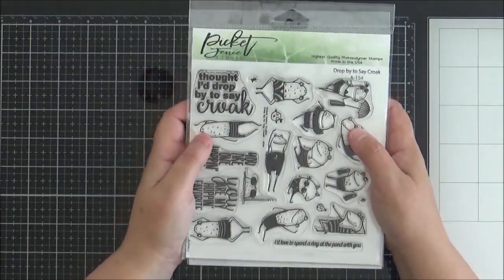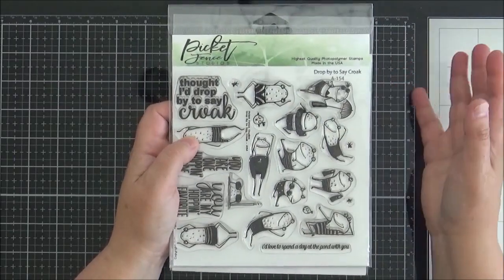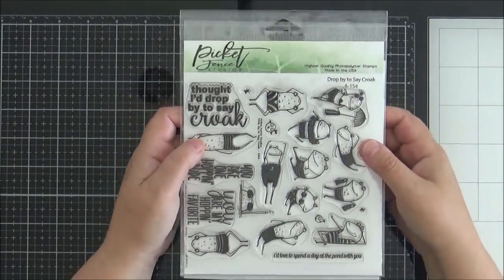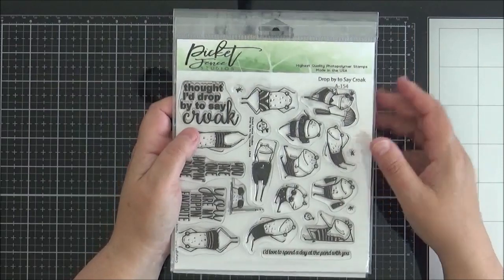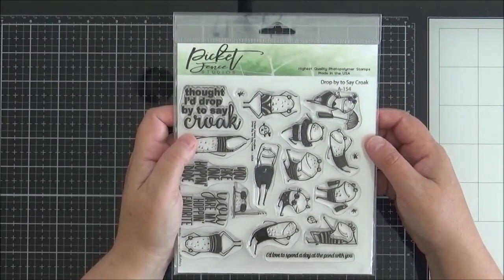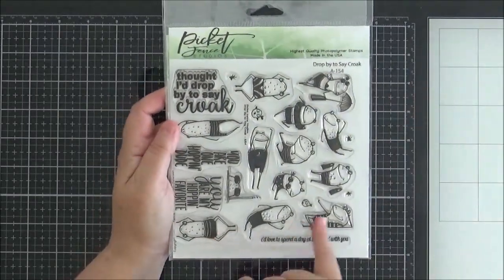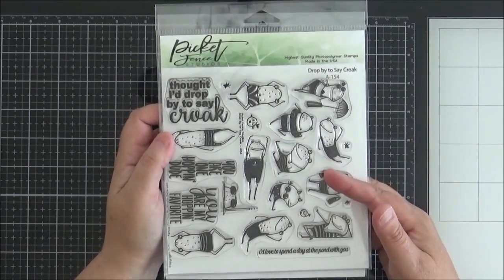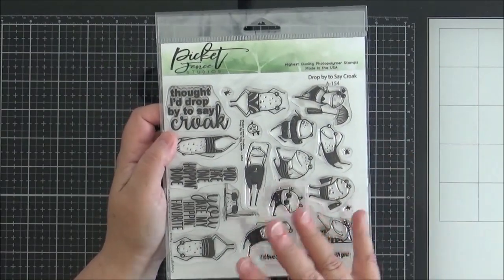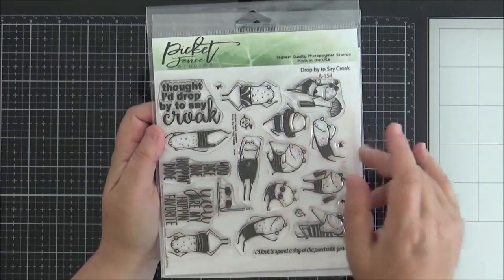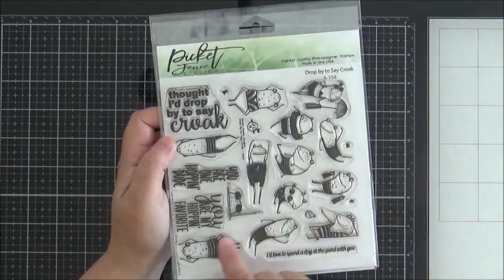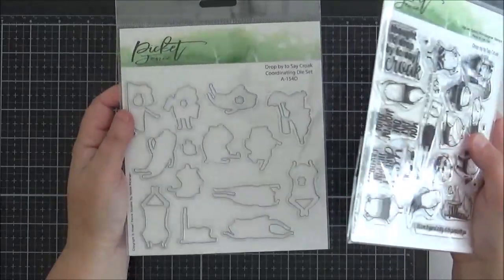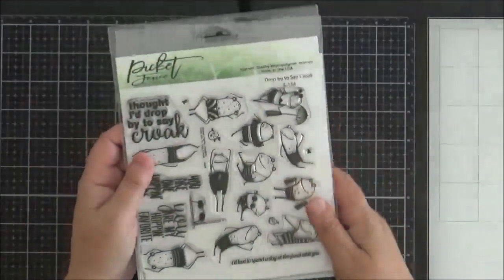And that leads me nicely onto the next product that I wanted to share with you. I've got some items coming up that all kind of have a pond theme to them. And they also pair really well with the tree silhouette dies that I just showed you. So some great examples of how they can both be used from the team. And I will share some more of their cards. But this is called Drop By To Say Croak. You've got all these really adorable frog images. And they are just so much fun. I only got to use one of these images. I really ran out of time this month. But I hope to make another card with this. You've got a sentiment there. I thought I'd drop by to say croak. You are my hopping favorite. It's such a fun set. I think we really loved playing with this one this month. There is coordinating dies to go with that.